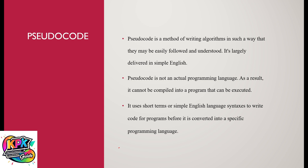Pseudocode is a method of writing algorithms in such a way that they may be easily followed and understood. Pseudocodes are largely derived in simple English. Pseudocode is not an actual programming language, and as a result it cannot be compiled or interpreted into a program that can be executed. It uses simple English-like tasks to write code for programs before it is converted into a specific programming language.